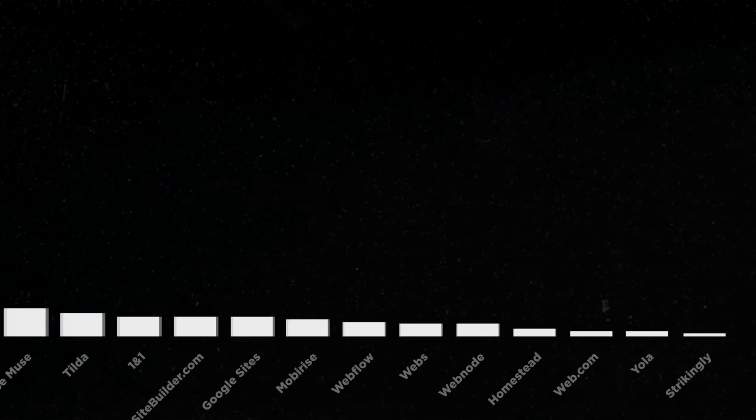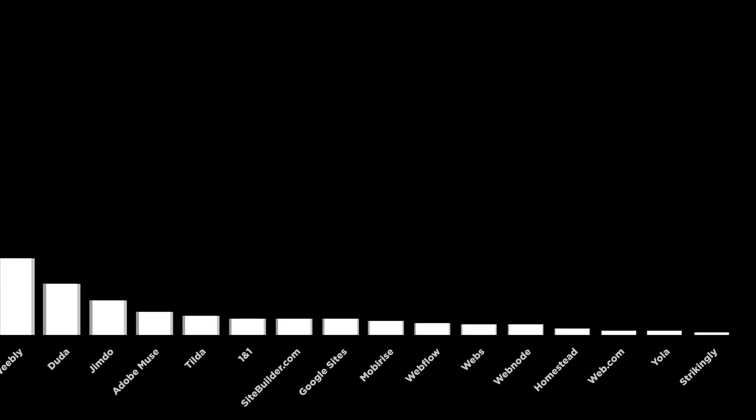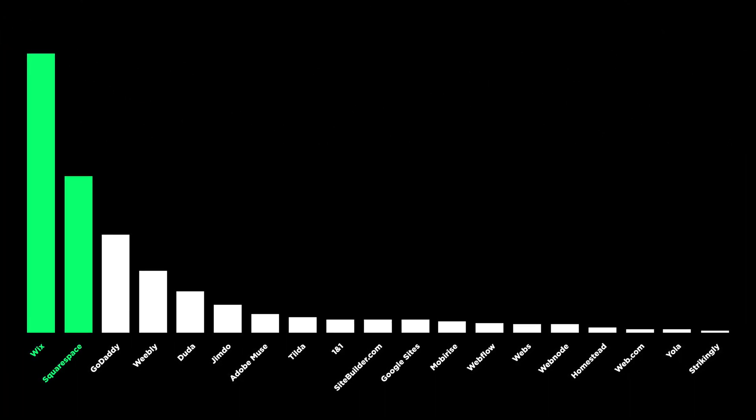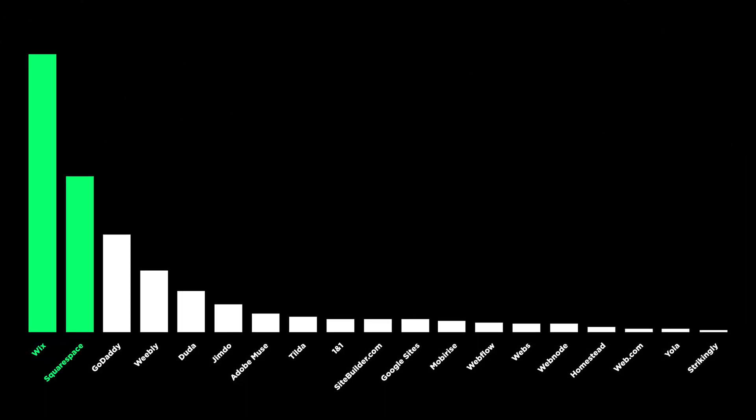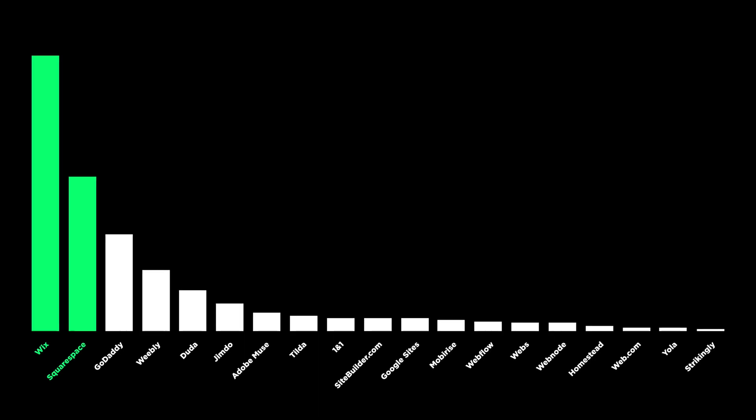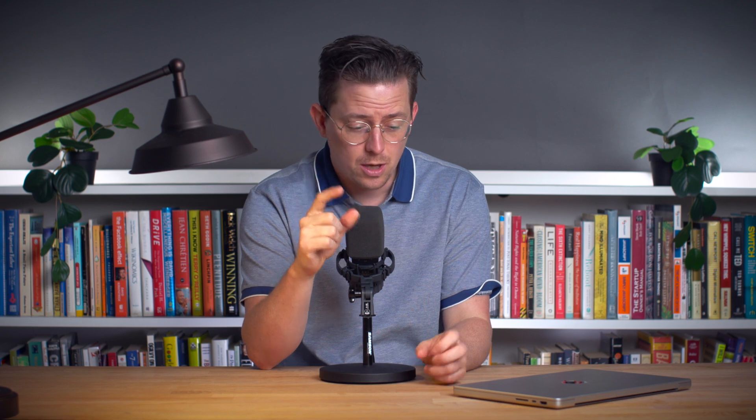This is a graph of the most popular website builders. Take a look at the top two — it's Wix and Squarespace. There's a reason Wix and Squarespace are so popular. They're both pretty great, but they do have differences, which I'll explain in this video.